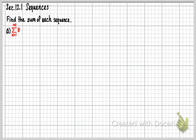This problem says find the sum of each sequence. Let's take a look at this. This is k equals 1 to 40, that's the sum, and it's 8.